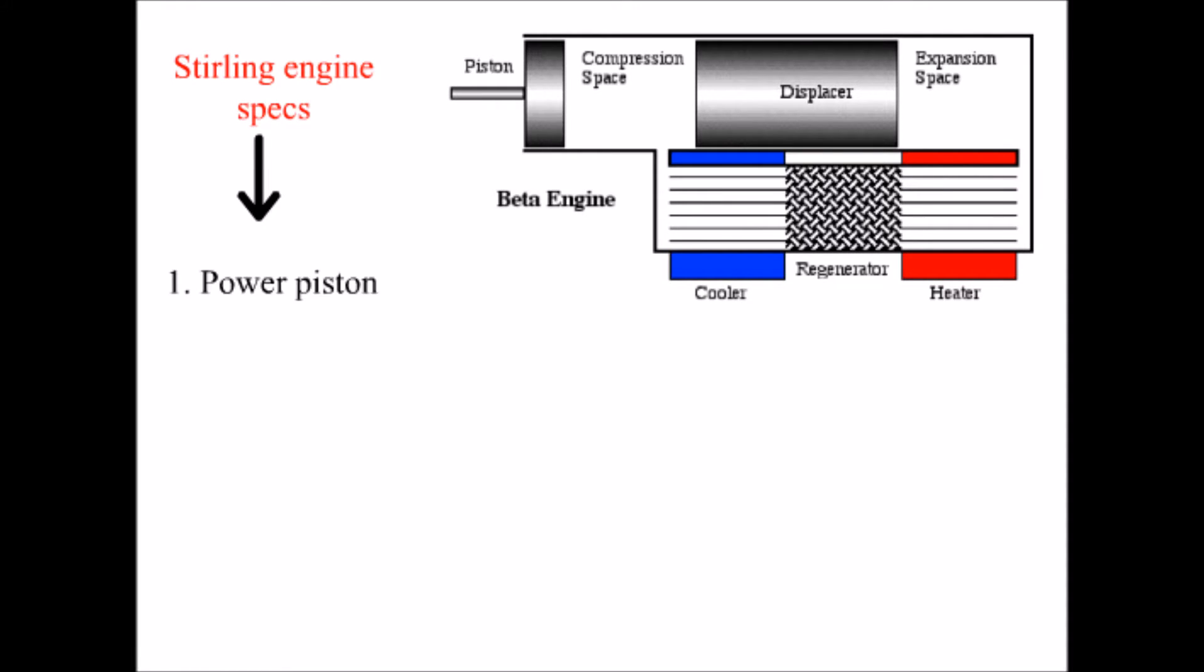Stirling engine consists of two power pistons for alpha, while one for beta and gamma, a displacer piston, and a regenerator stack.